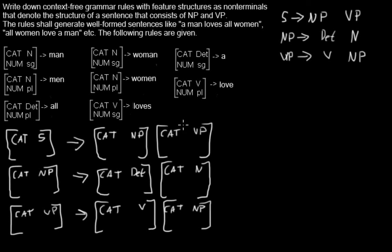So now we can create sentences that are rubbish and we have to make sure that the rules shall only be able to generate well-formed sentences like 'a man loves a woman' or 'all women love a man' and so on.